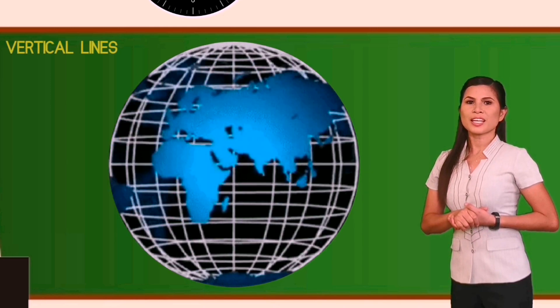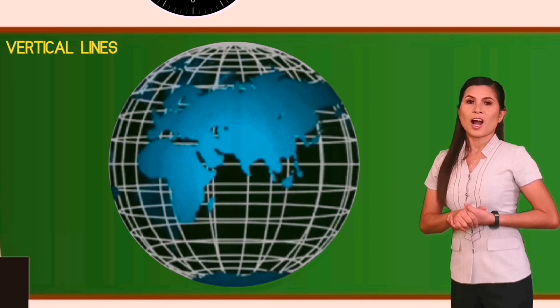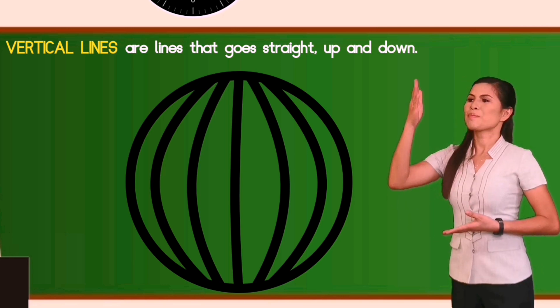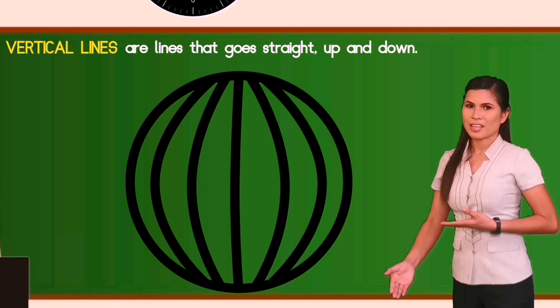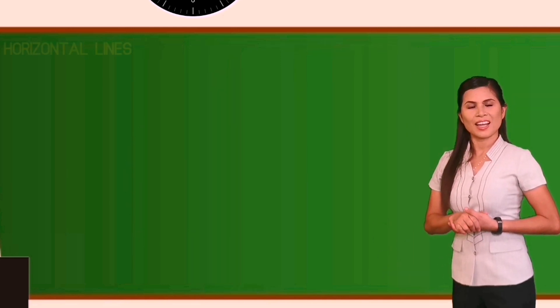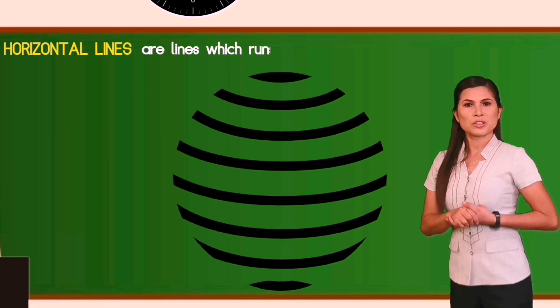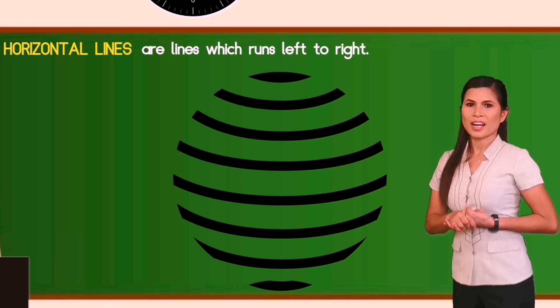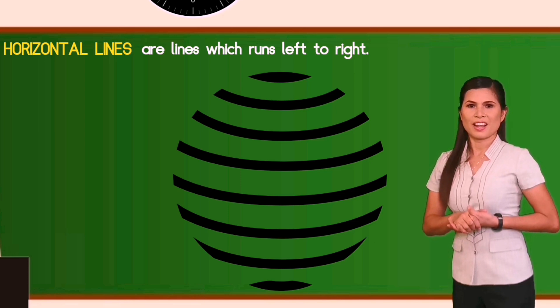If you notice, there are two types of lines in the globe. Vertical lines are lines that go straight up and down, while horizontal lines are lines which run left and right, or right to left.